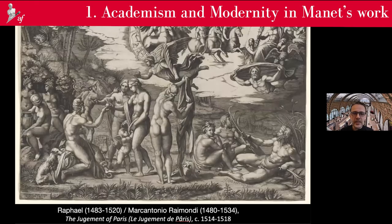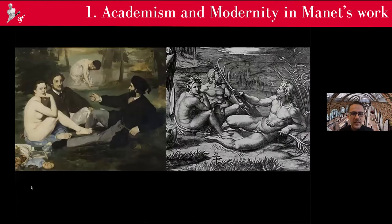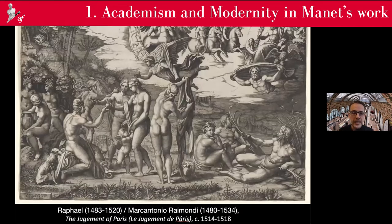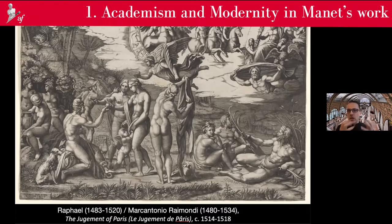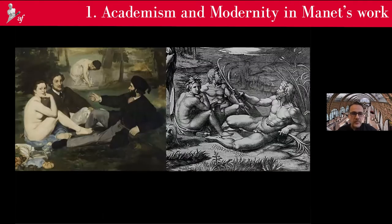Some of you may have noticed this particular part. You can see the exact composition that Manet reintroduced in Luncheon on the Grass. Obviously, in the original work it's related to Paris — to a very prestigious history, mythology, and so on. So it's the representation of high culture. But the big twist of Manet is actually to keep the same composition but bring it into a very common setting.